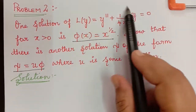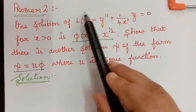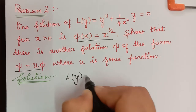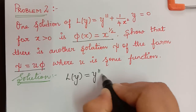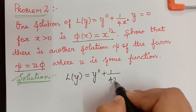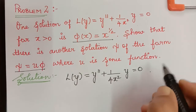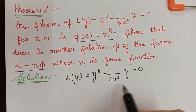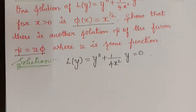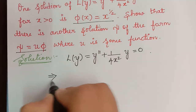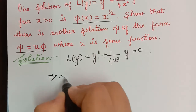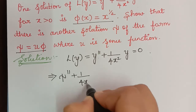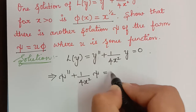First, let us write the given equation: L(y) = y'' + (1/4x²)y = 0. Since ξ is a solution of this equation, ξ must satisfy it. Substituting ξ in place of y, we get ξ'' + (1/4x²)ξ = 0.